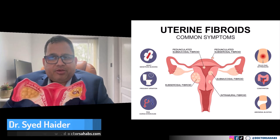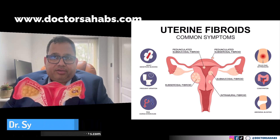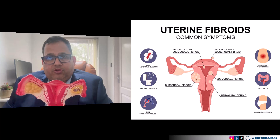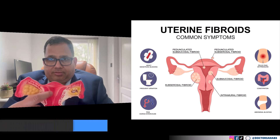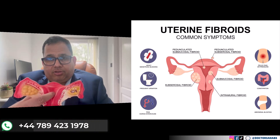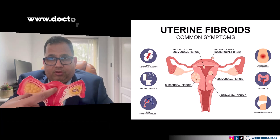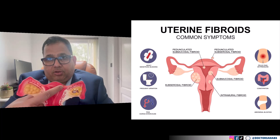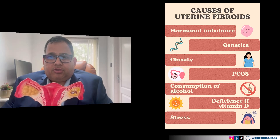Fibroids are also a cause of infertility, which is one of the most common complications. If the fibroid is large, it can block the fallopian tube, and due to this blockage, fertilization does not occur in the uterine cavity.